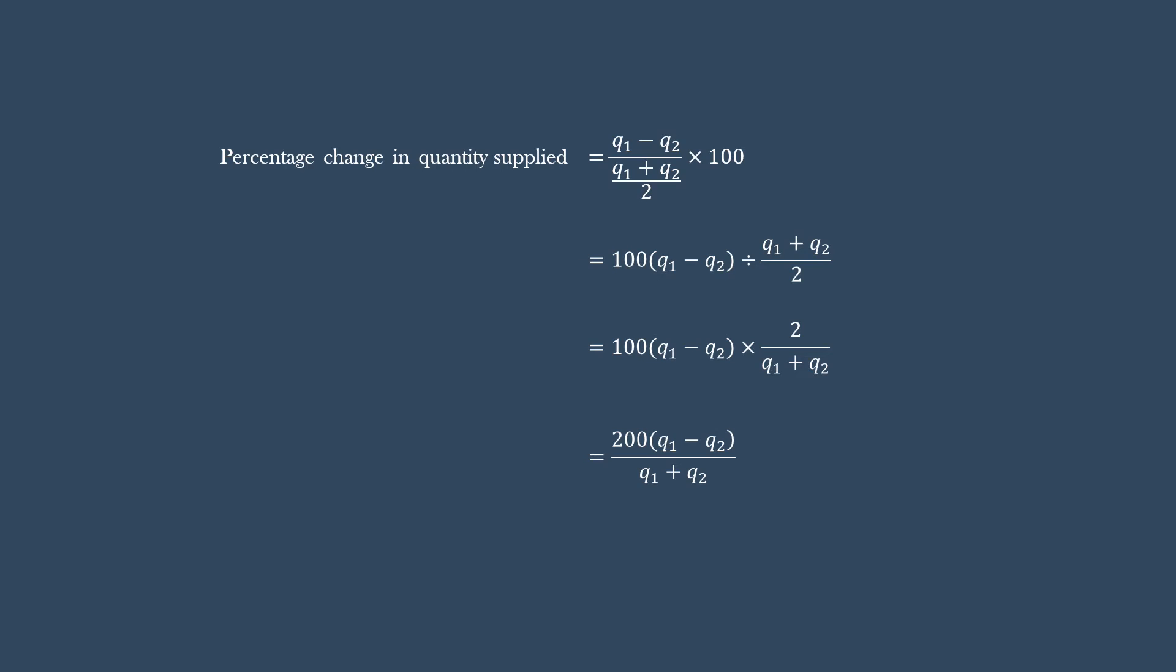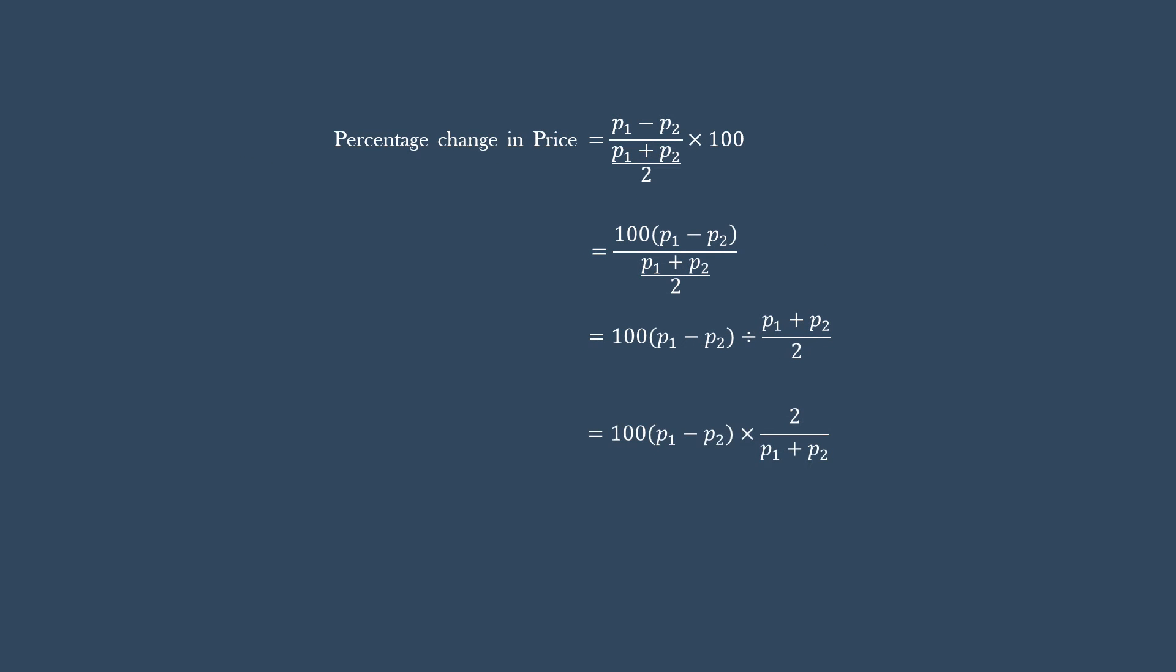And now the percentage change in price. We get 200 times p1 minus p2 over p1 plus p2.